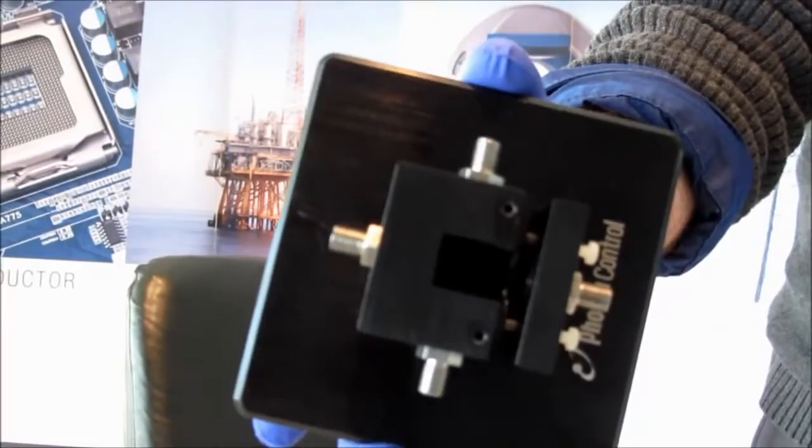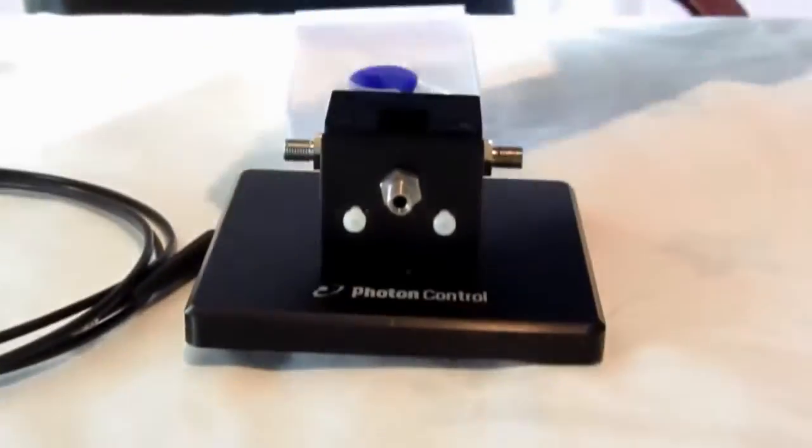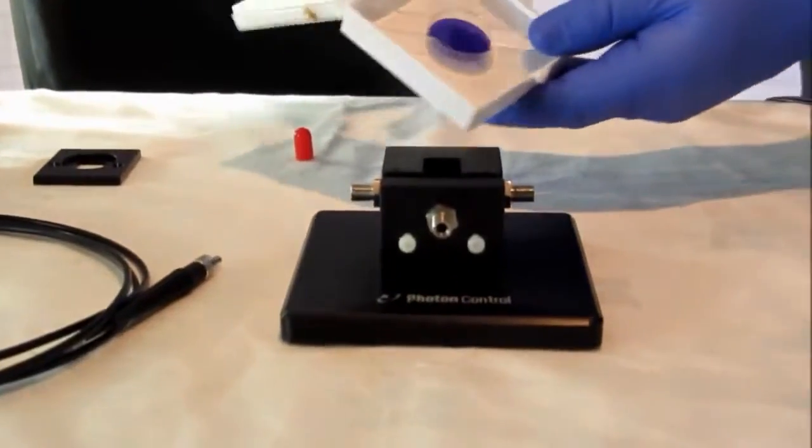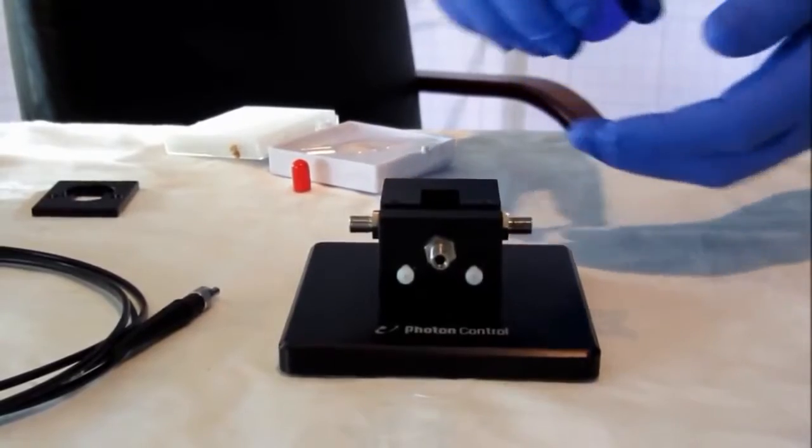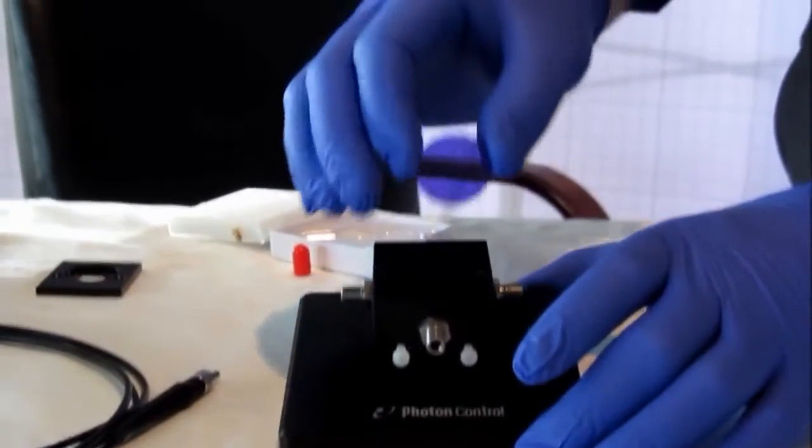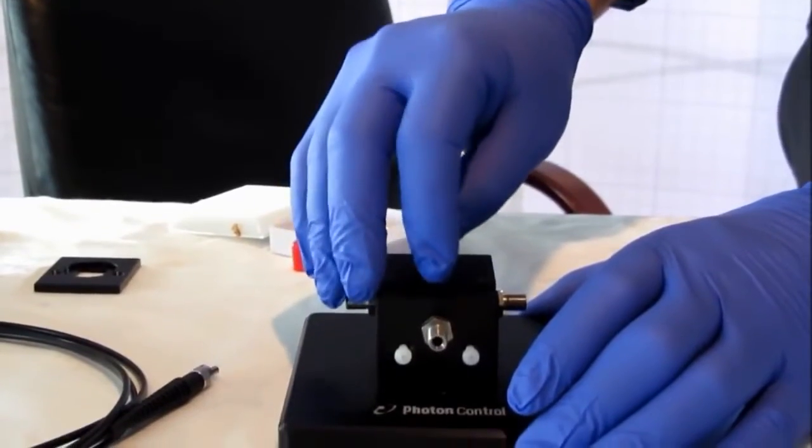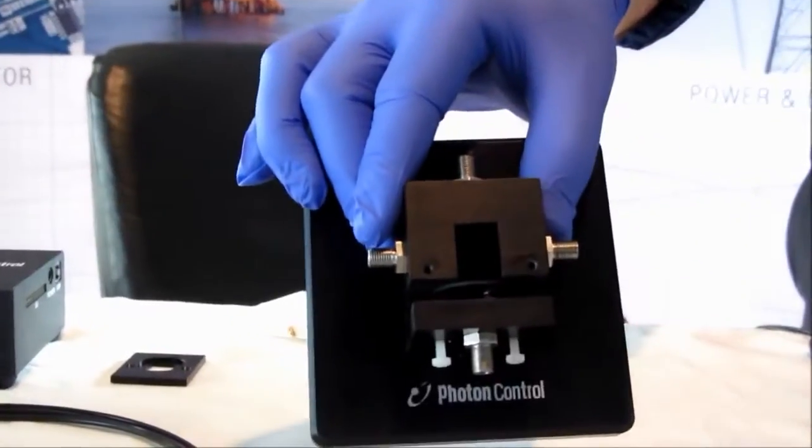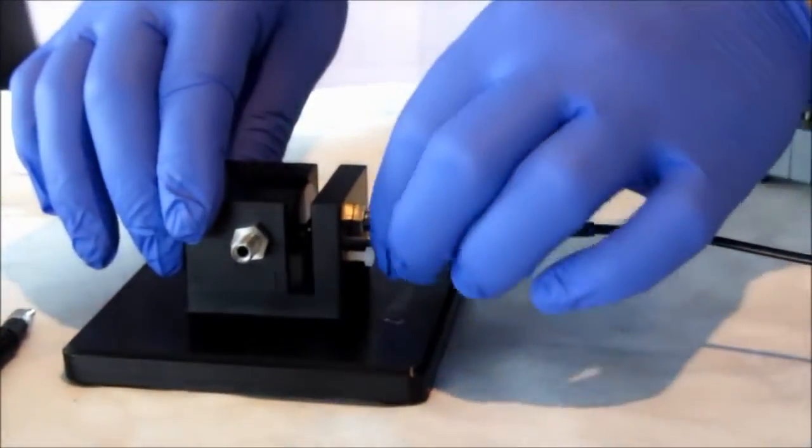Here we have the 4-way cuvette holder which collects UV, vis, NIR, light. Glide the color filter sample into the cuvette holder and simply connect your fiber.